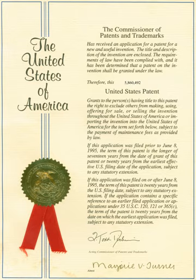To prove infringement, the patent owner must establish that the accused infringer practices all the requirements of at least one of the claims of the patent. In many jurisdictions the scope of the patent may not be limited to what is literally stated in the claims, for example due to the doctrine of equivalence. An accused infringer has the right to challenge the validity of the patent allegedly being infringed in a counterclaim. A patent can be found invalid on grounds described in the relevant patent laws, which vary between countries. Often, the grounds are a subset of requirements for patentability in the relevant country.